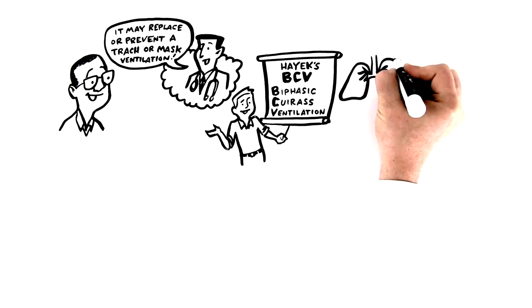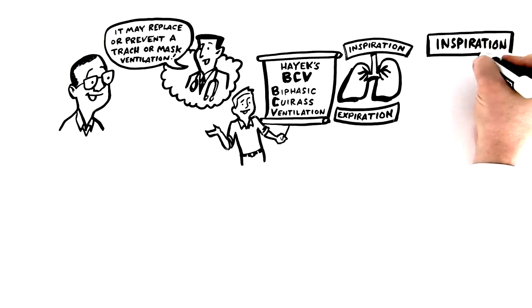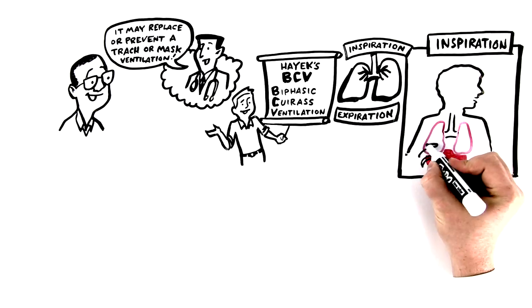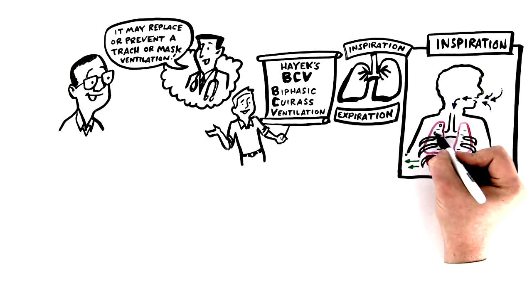Breathing consists of two phases, inspiration and expiration. During the inspiration phase, the diaphragm moves downwards while the rib muscles pull the ribs out, expanding the chest, creating a negative pressure in the lungs and causing you to breathe in.